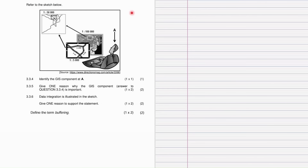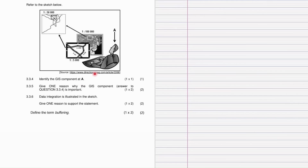We will now answer a past paper question. In the sketch, point A is pointing to a person using GIS — they are taking two different maps and combining them into one, which is known as data integration. Question 3.3.4 asks us to identify the GIS component at A. The answer is clearly the user.